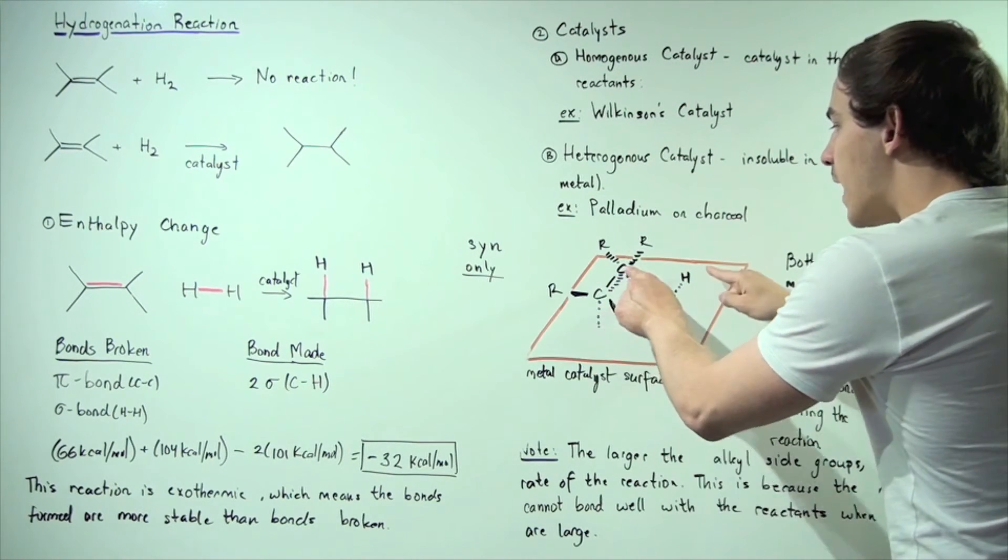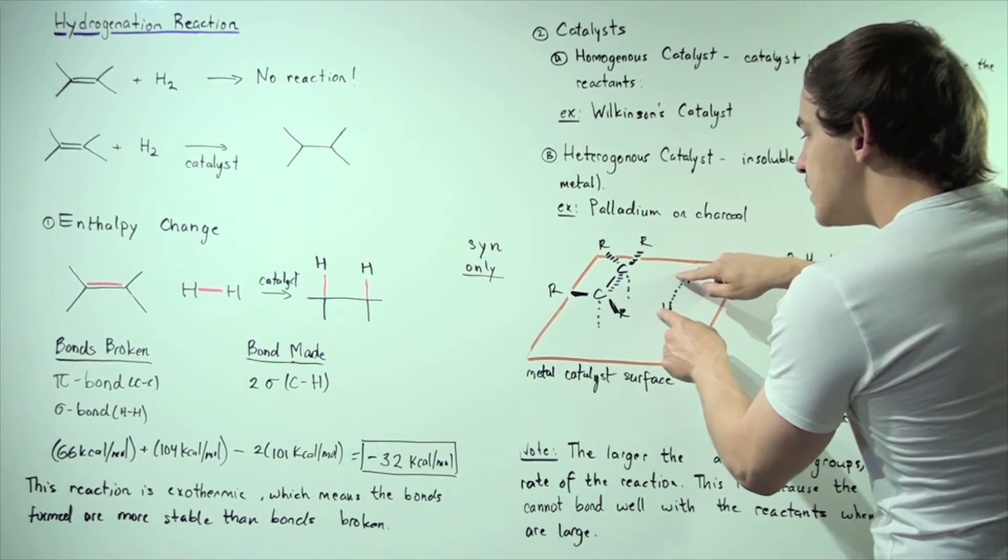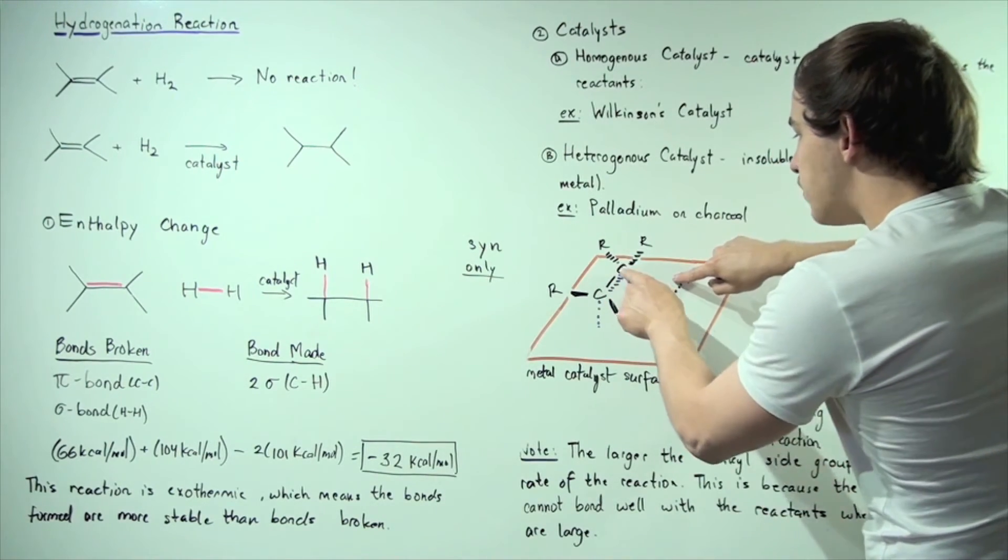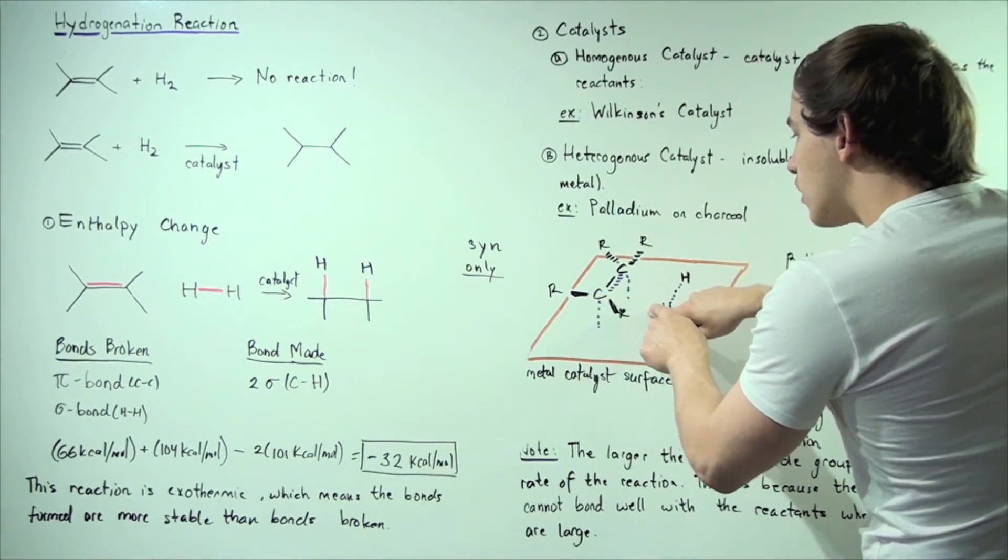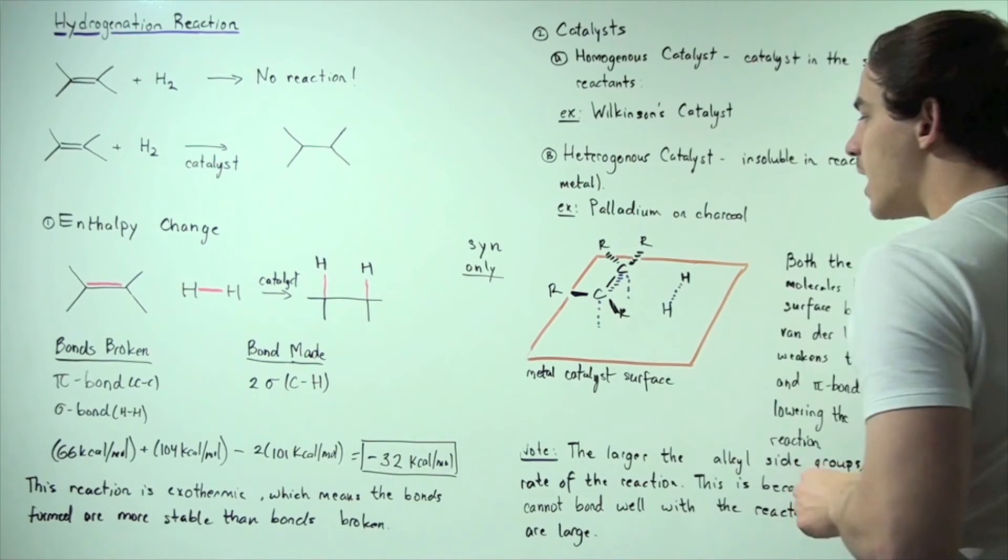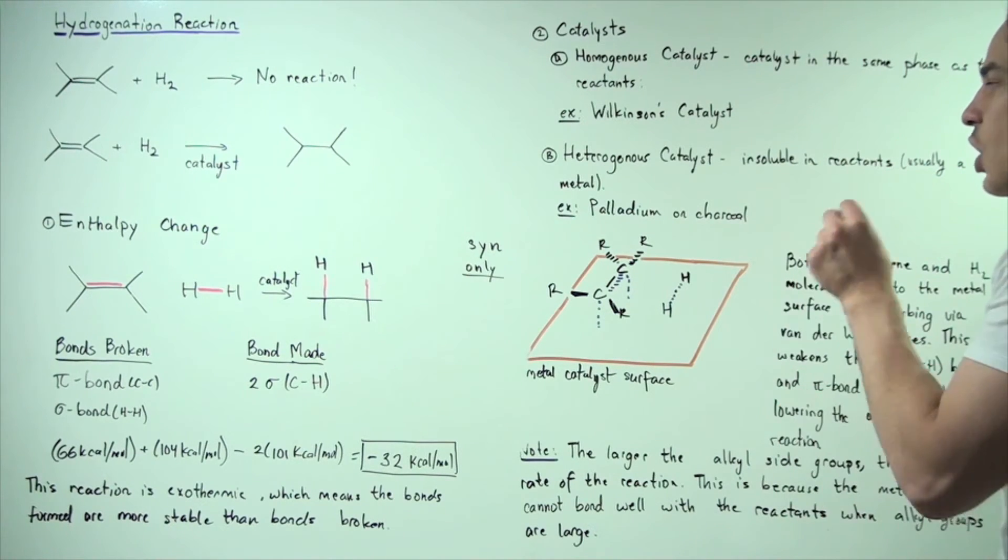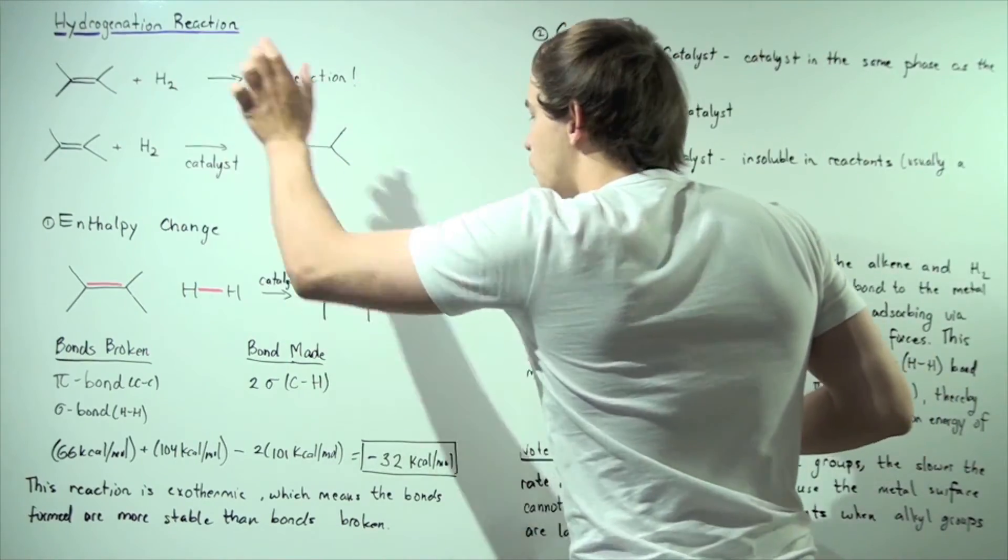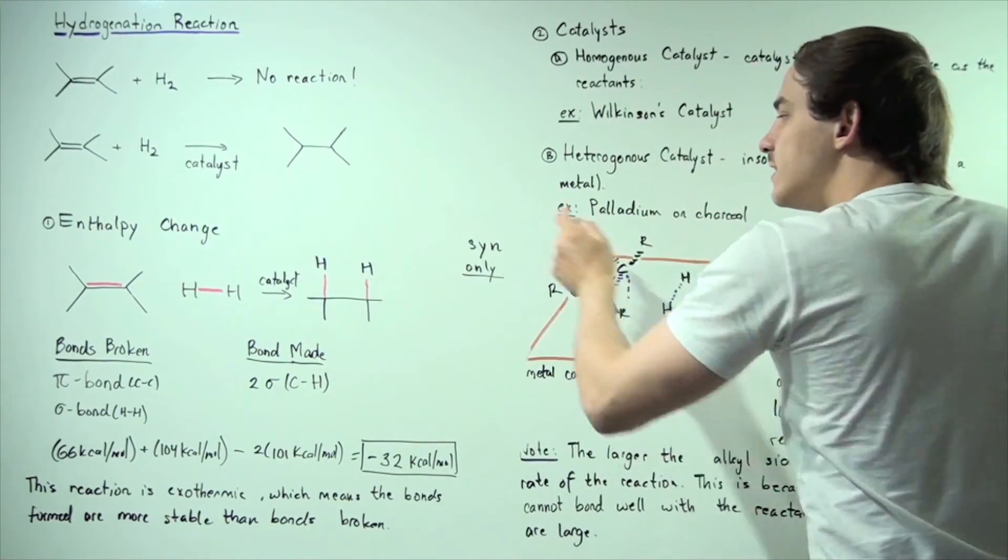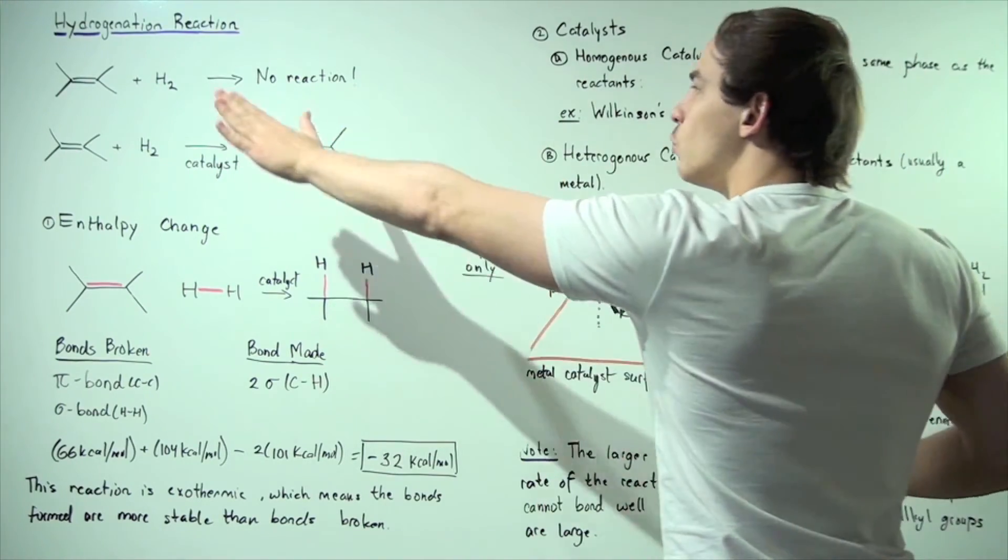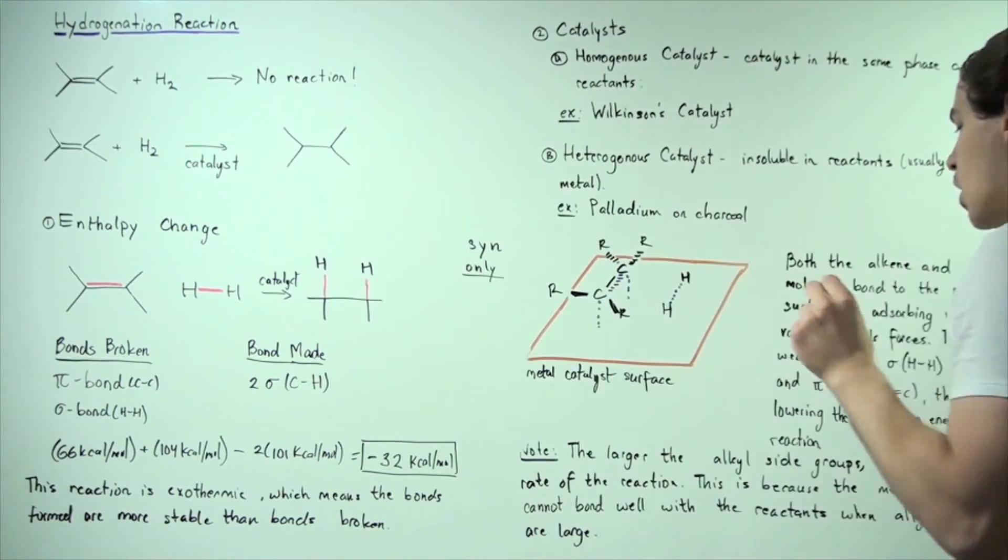Now, notice when these two bonds are being broken, these two bonds are being made. So the carbon H bond is being made and the carbon H bond is being made on both sides as these two bonds are being broken. And the only type of addition that takes place in a hydrogenation reaction is syn addition. We will never have an anti-addition in the following hydrogenation reaction.